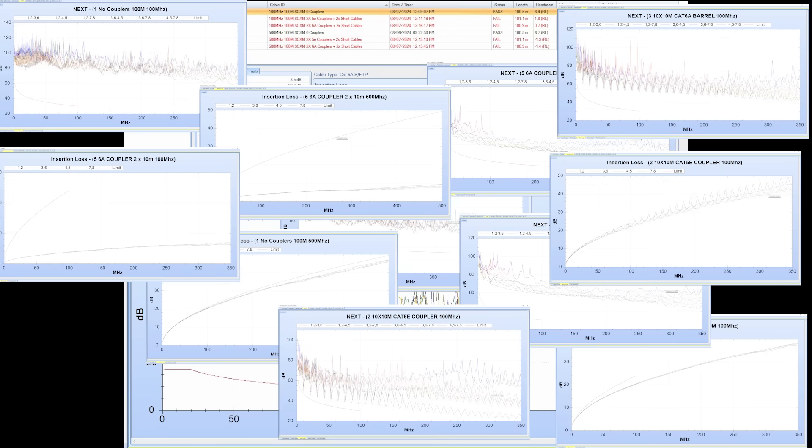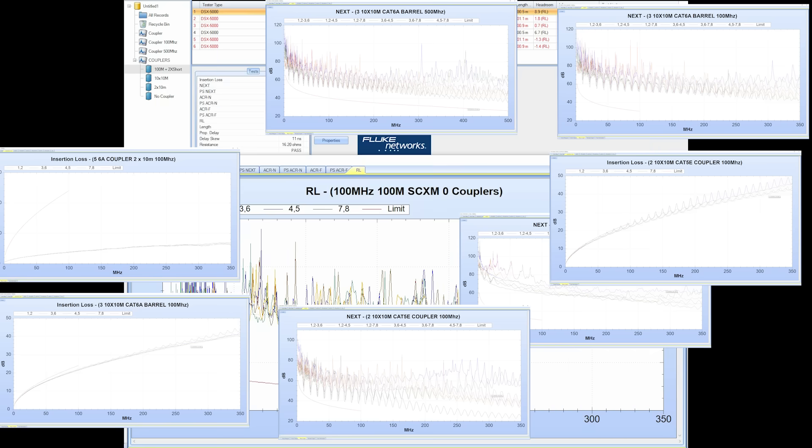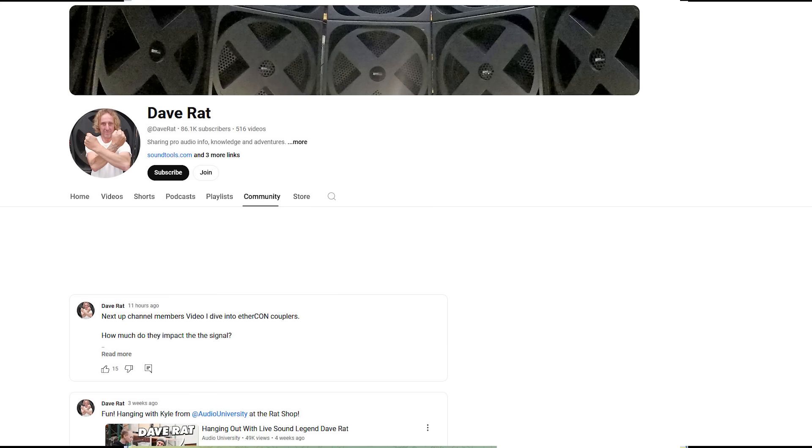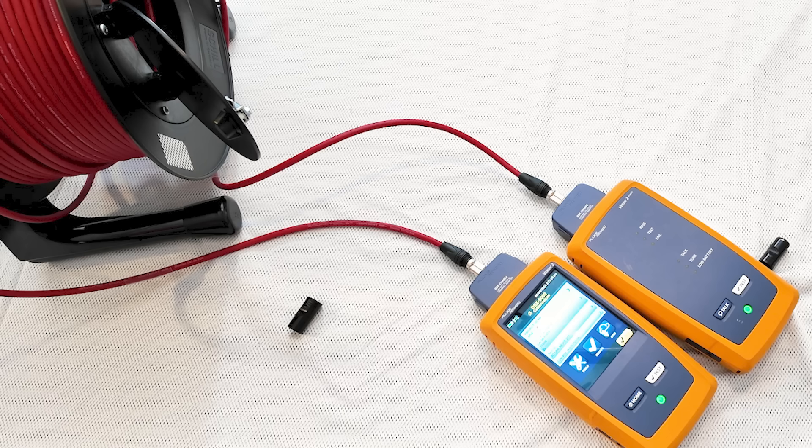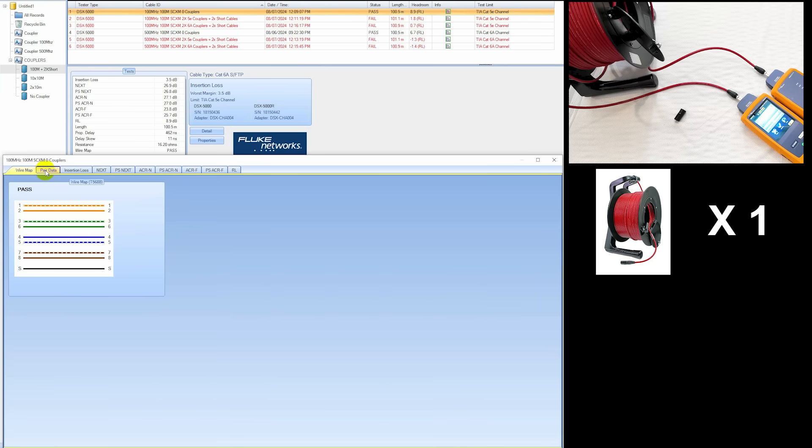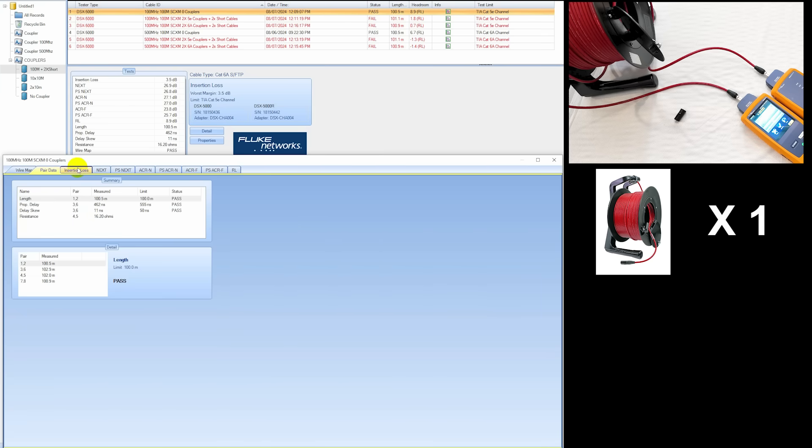All right, so we grabbed a lot of data from a lot of tests, so I'm going to focus on the failures and the highlights. I have uploaded all of these data files to the YouTube channel members' Telegram channel, and you can find a link to that in the members' dashboard in the messages there. You'll be able to download and dive into these further should you choose to do so and hang out with other channel members there. All right, so let's start with the 100 megahertz, 100 meter, SuperCAD XM with no couplers. And let's go ahead and go down the line real quick here.